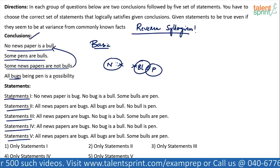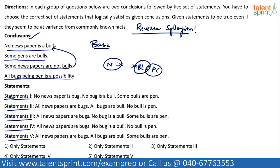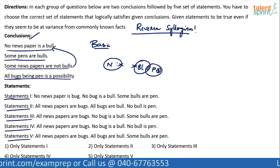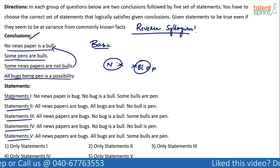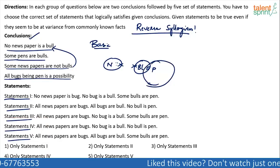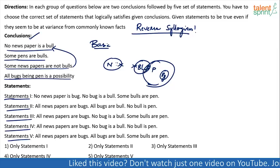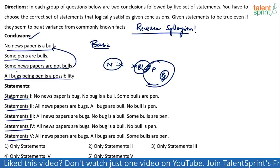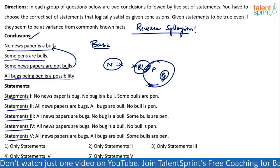Next: 'All bugs being penned is a possibility.' So all bugs can be pens, meaning there has to be a smaller circle inside which is bugs. Let me draw pens first. This is pens — all bugs being pens is a possibility, so this is the basic diagram: no newspaper is a bull, some pens are bulls, some newspapers are not bulls, and all bugs being penned is a possibility.